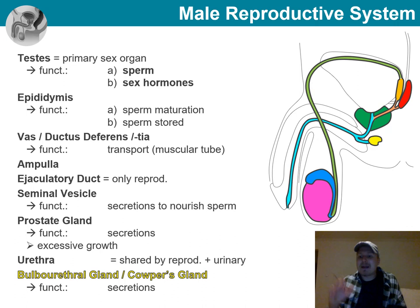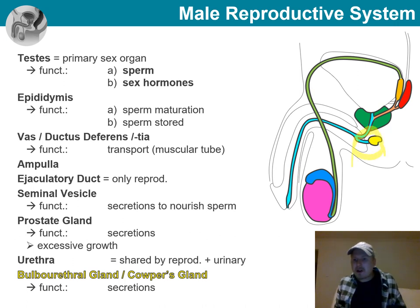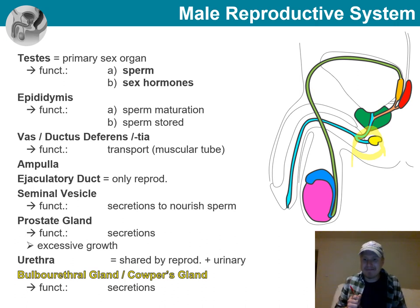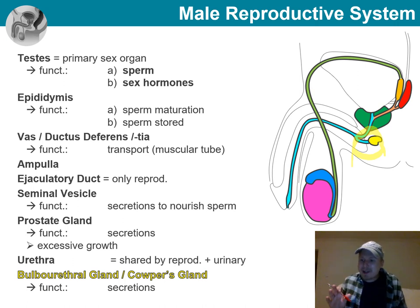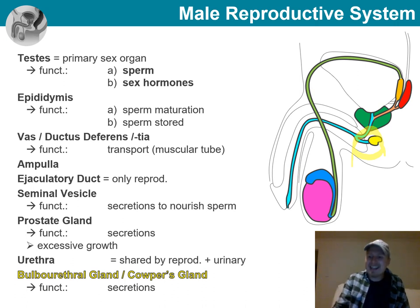The last gland contributing to these secretions is the bulbourethral gland, also called Cowper's gland. Its secretions are released in response to sexual stimulation — thick, clear mucous secretions that neutralize any traces of acidic urine remaining in the urethra.